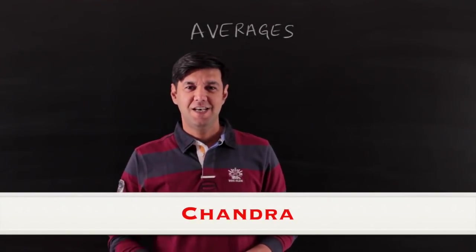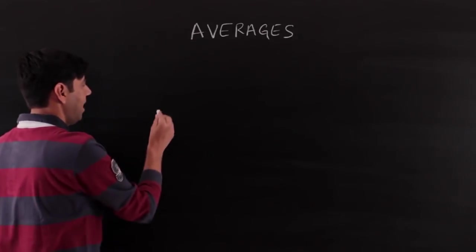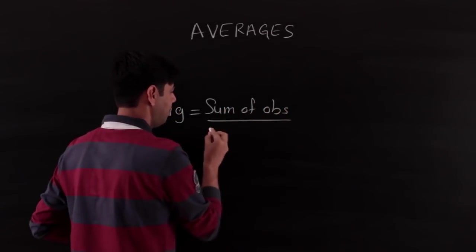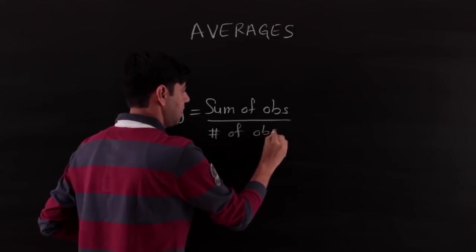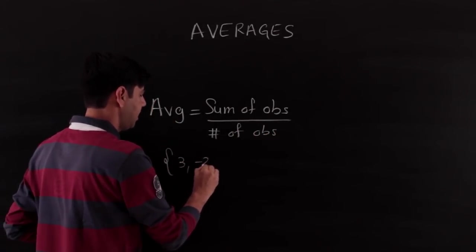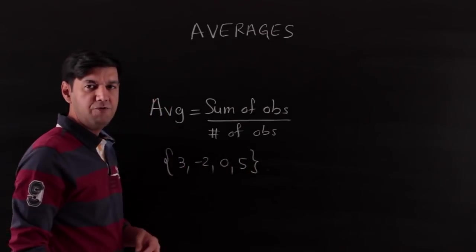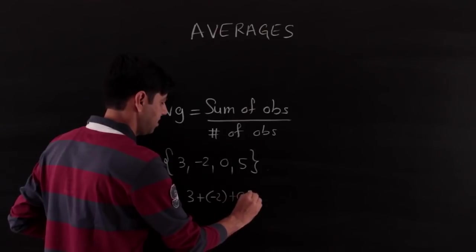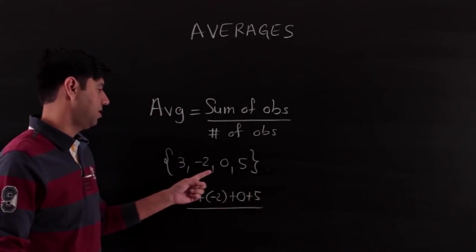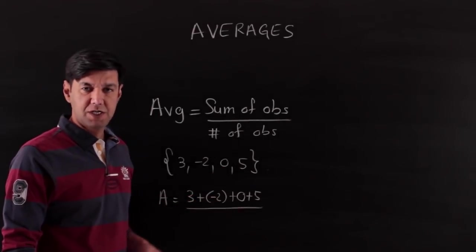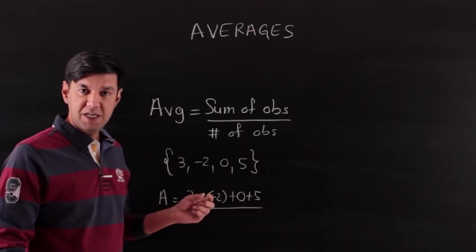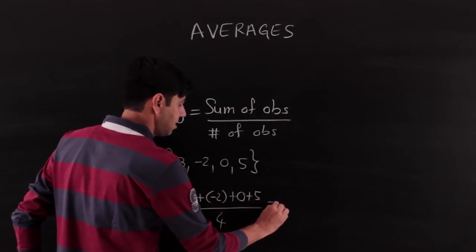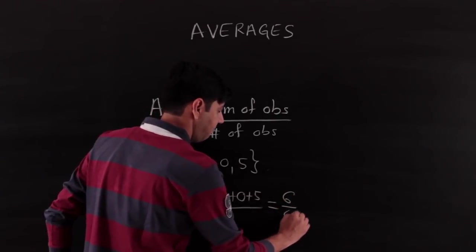We begin with averages. The average is given as sum of observations divided by the number of observations. If we have a set of observations 3, -2, 0, 5, we find the average by adding them: 3 + (-2) + 0 + 5. Note that 0 does not contribute to the sum, but we still count it as an observation. There are four observations with a sum of 6.